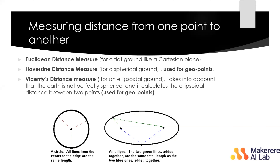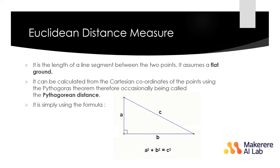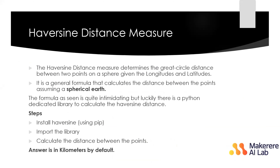I'm going to focus on the Haversine formula. It determines the great-circle distance between two points on a sphere, given the longitudes and latitudes. The total distance is calculated by computing the distance between consecutive points and summing those distances. The formula is quite complicated, but thanks to Python you can just install haversine, import the library, and calculate the distance between points.